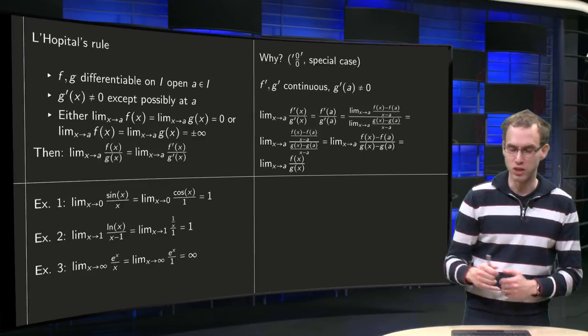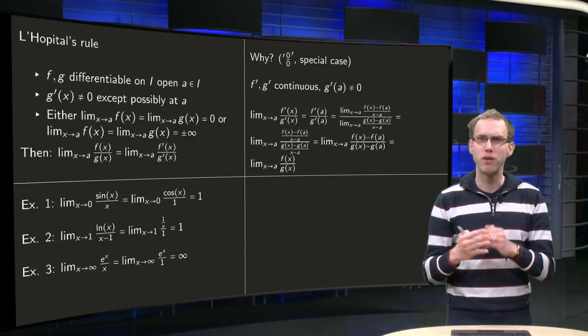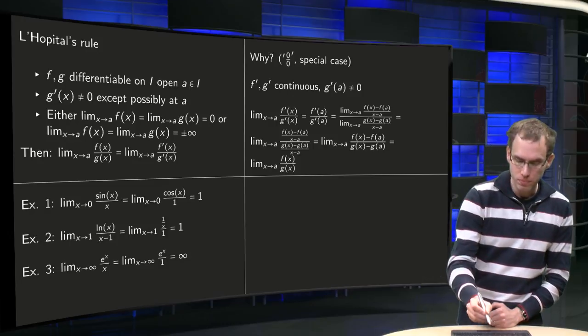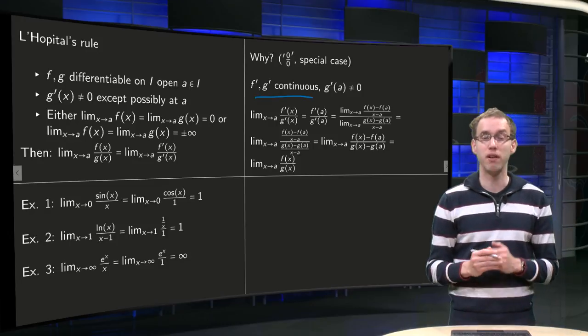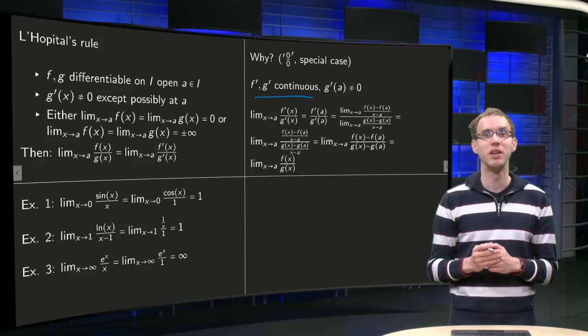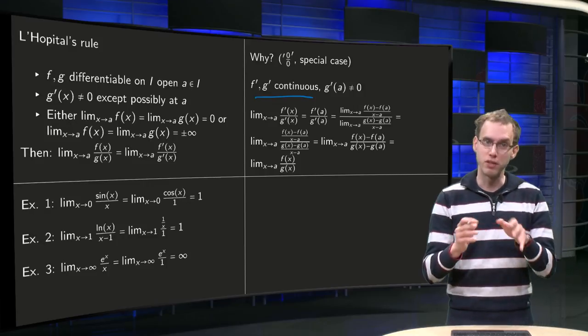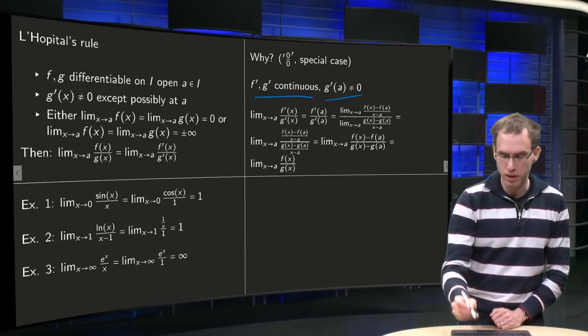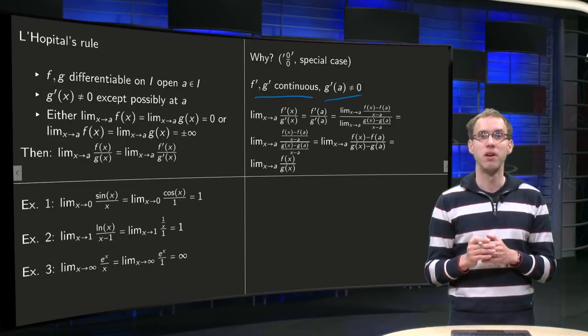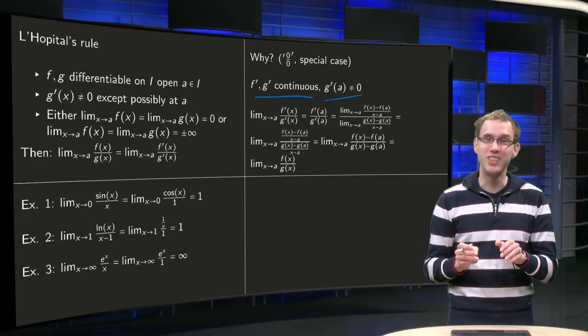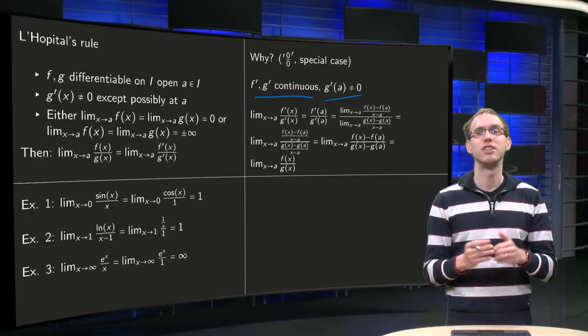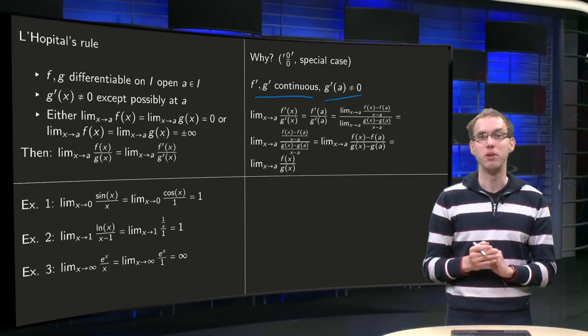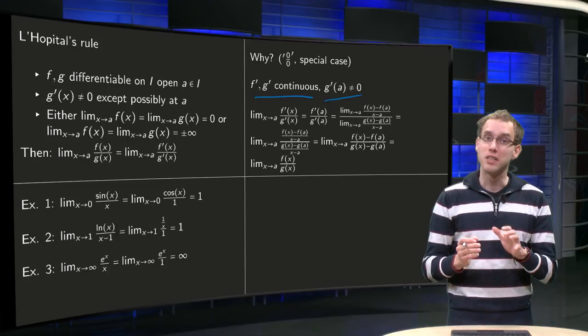Now, why does it work? Let's look at the 0 over 0 in a special case. And what special case exactly? Well, we want f' and g' to be continuous. So not only f and g differentiable, but continuously differentiable. And furthermore we require g' to be non-zero. L'Hôpital's rule works in the general case, but it is much easier to show why it works in this case. So let's do it in this case and leave the more general case for the textbook.